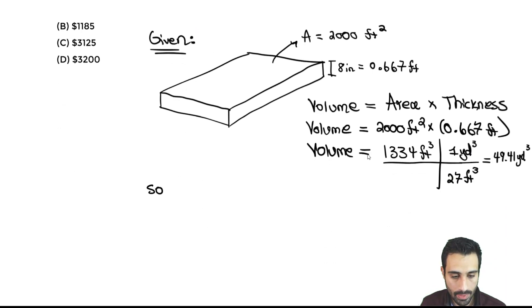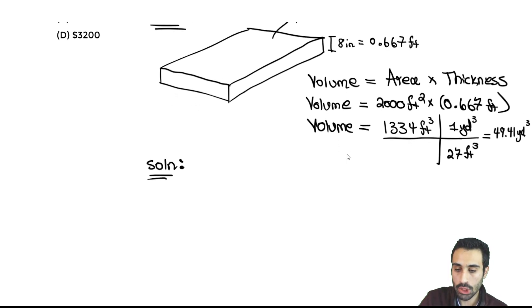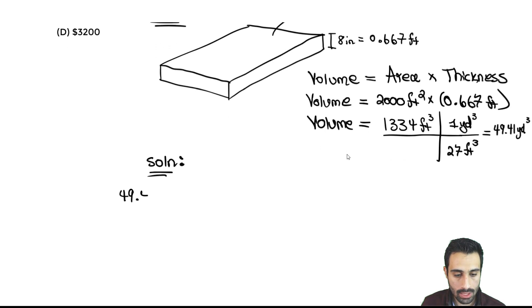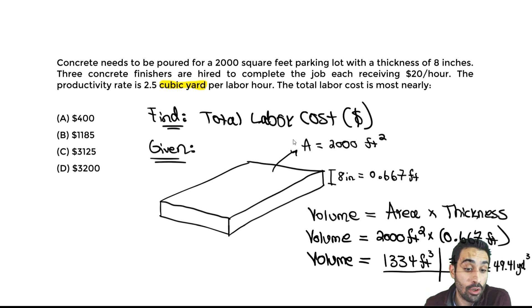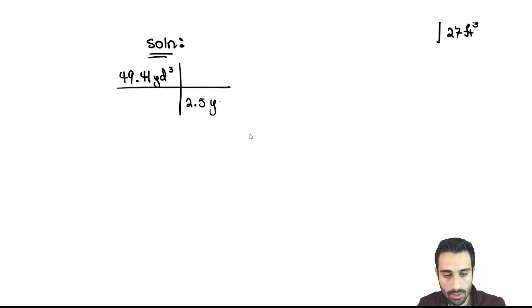For the solution, what we will do first is start with the volume, the volume that we need to pour: 49.41 cubic yard. Then I know we have cubic yard here. I want cubic yard to match diagonally. I can do that by including this conversion factor, the productivity rate of the amount of concrete that can be poured: 2.5 cubic yard per labor hour. This is the ideal productivity. I can put that at the bottom, 2.5 cubic yard per labor hour on top. These would cancel.